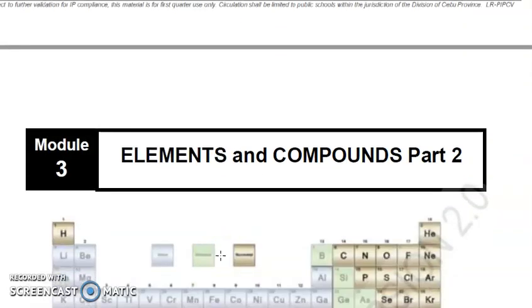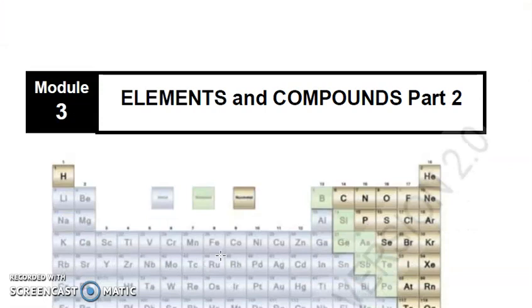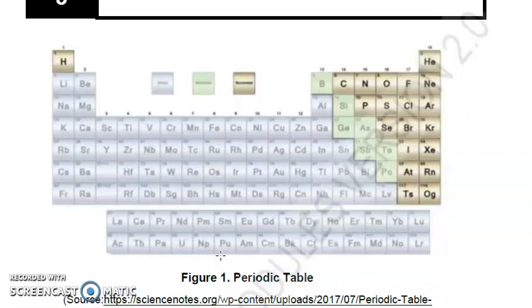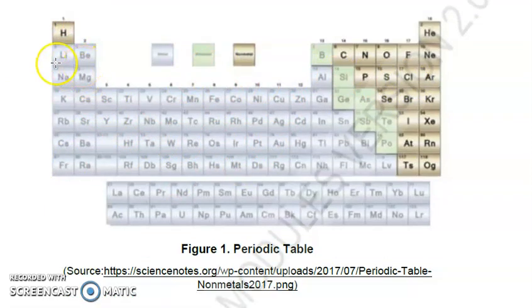Our discussion will focus on elements and compounds, part two, because last meeting we discussed part one. As you can notice, this is the periodic table of elements. The silver in color are the metals, then we have the metalloids here in yellow-green, then we have the yellow non-metals. This is the periodic table of elements.